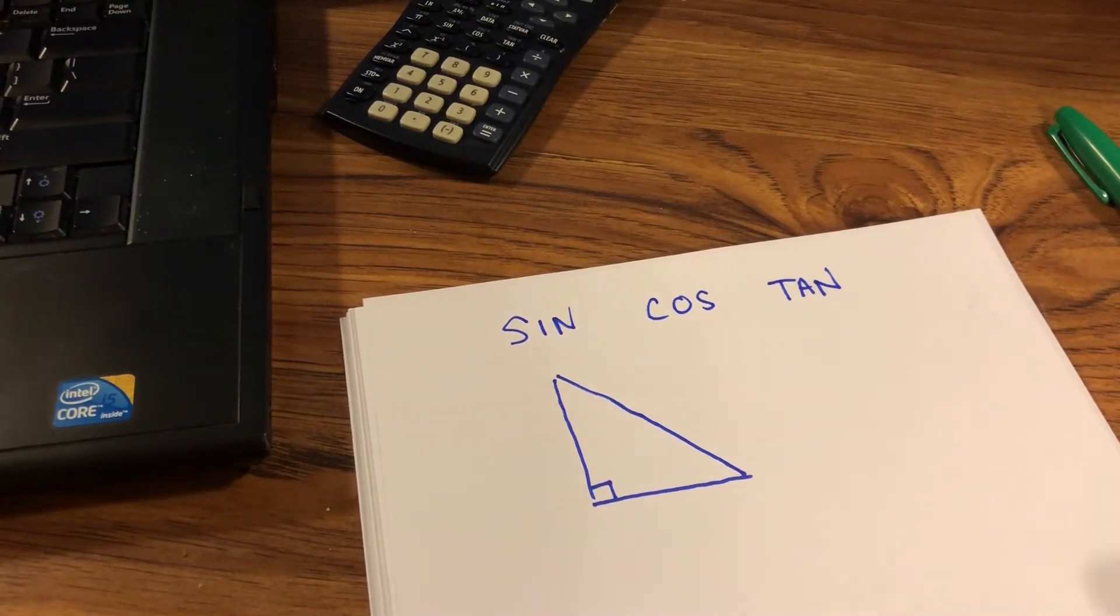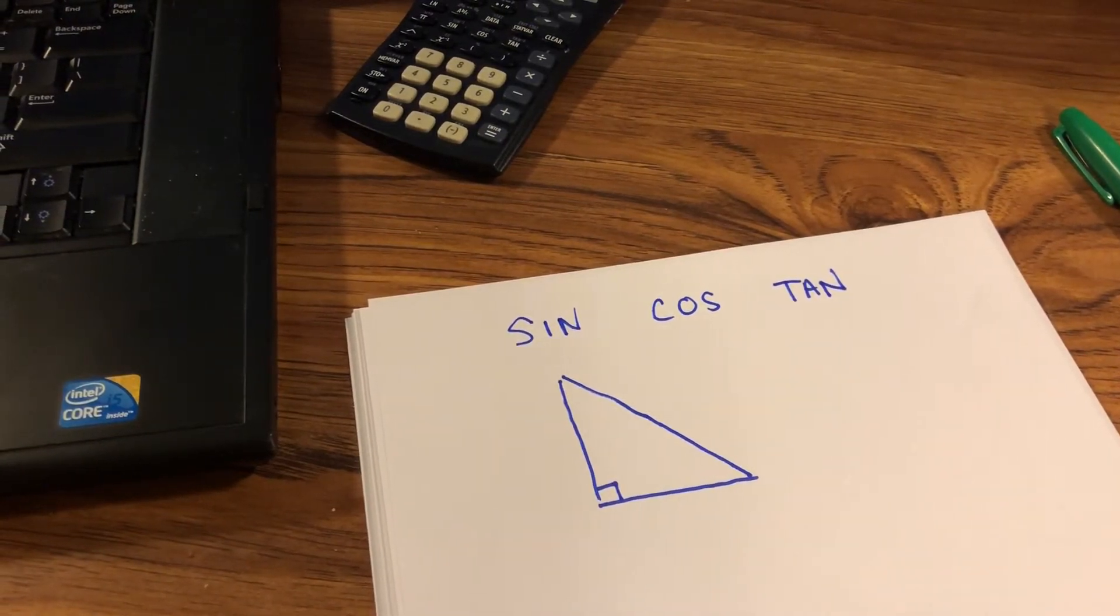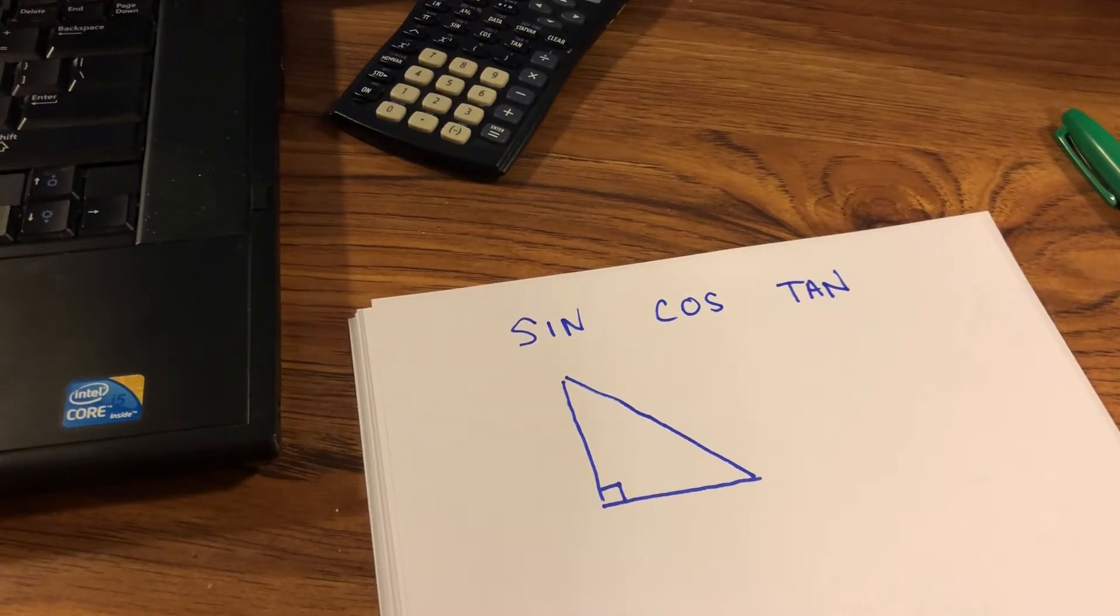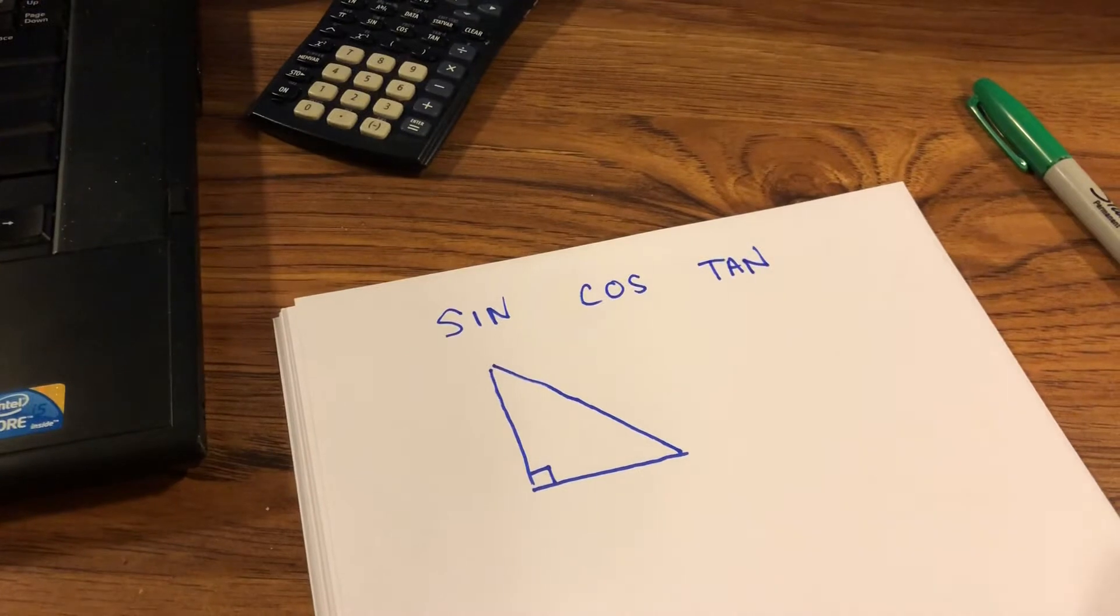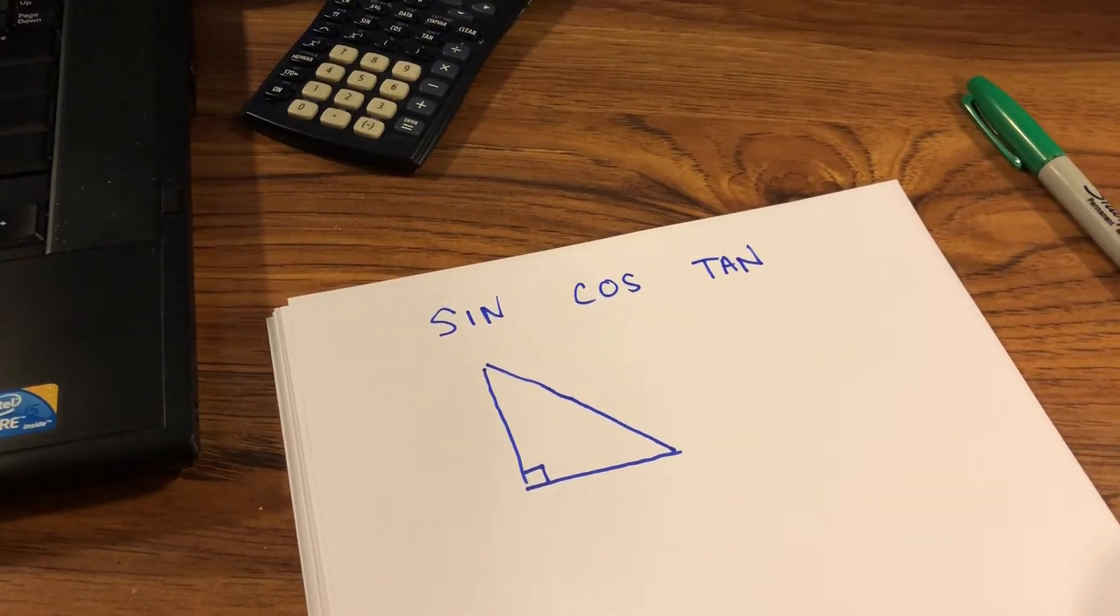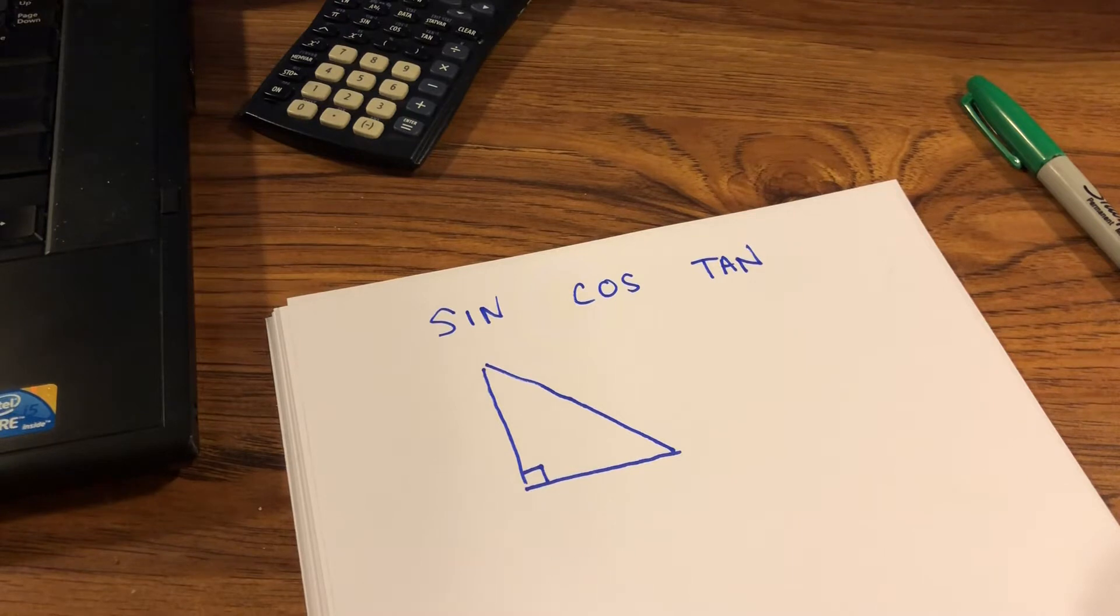The question has been asked: when do I use sine, when do I use cosine, and when do I use tangent? It's very important when we're looking at a right triangle that we understand the importance of what information we're given.